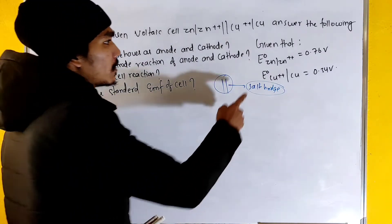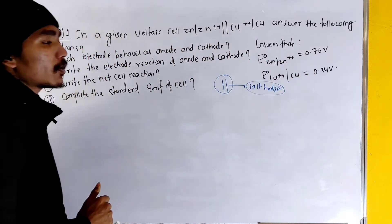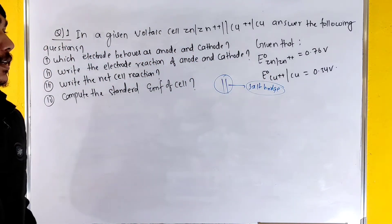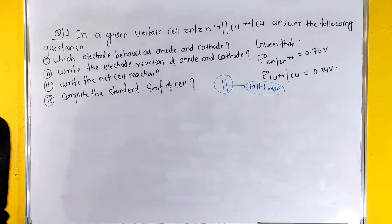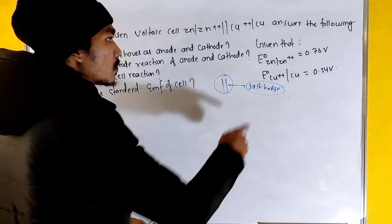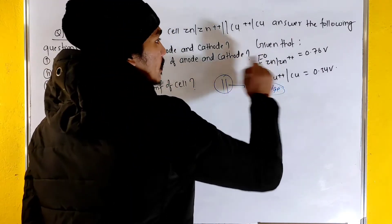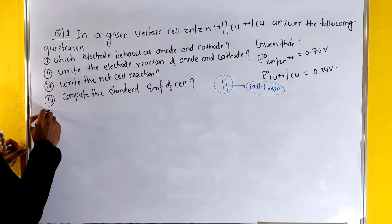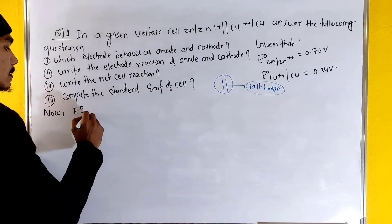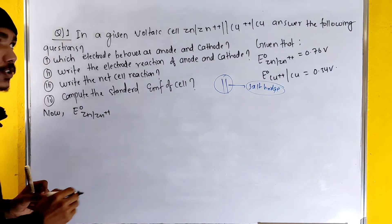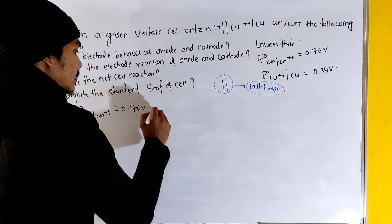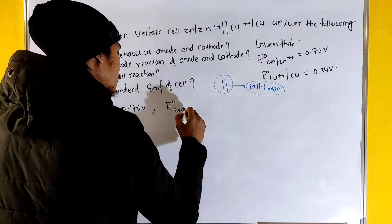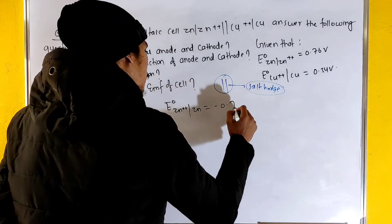The given data: the standard reduction potential of Zn²⁺/Zn is given as minus 0.76 volt, and the standard reduction potential of Cu²⁺/Cu is given as 0.34 volt. The reduction potential mark for Zn²⁺/Zn is minus 0.76 volt.